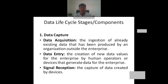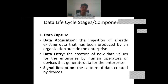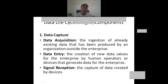The first stage is data capture. Data capture means we are capturing data from external resources. Data acquisition is a part of data capturing — it means the ingestion of already existing data produced by an organization outside the enterprise. Data entry is the creation of new data values by human operators or devices. Third is signal reception, which is the capturing of data created by devices.